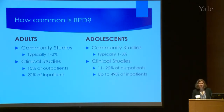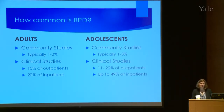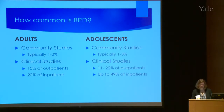If we look at how common BPD is, it's typically 1% to 2% in the general population, and clinical studies show that it's about 10% of outpatients and about 20% of inpatients in adults. One of the reasons we felt it was so important to cover today's topic is the prevalence rates in adolescents. In community studies it can be as frequent as 3%, and clinical studies show as high as 22% of outpatients and up to 49% — almost half of all inpatients — meet criteria for this disorder. This really speaks to why this conference is so important in addressing the needs of children and adolescents with these potential symptoms.